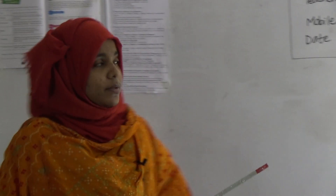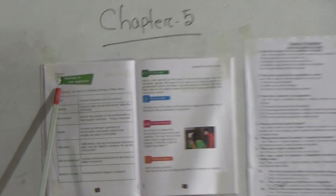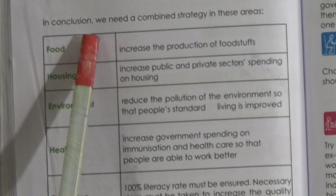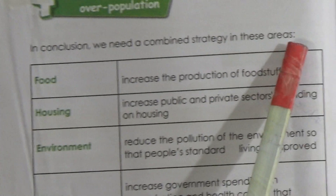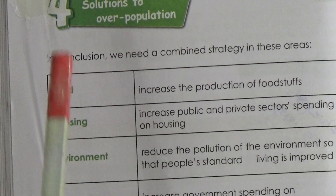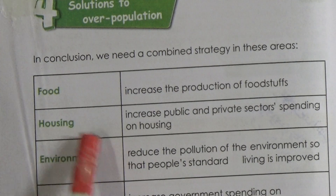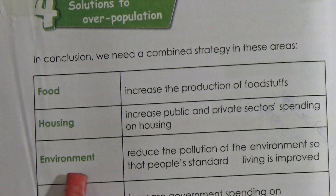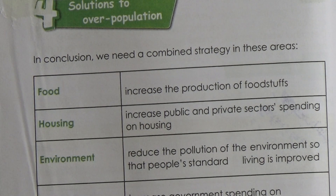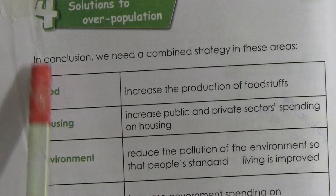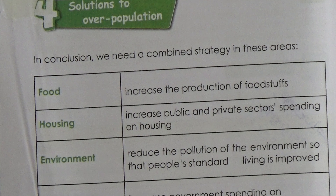Let's start today's topic: Chapter Five, Topic Four — Solution of Overpopulation. In conclusion, we need a combined strategy in these areas: food, housing, environment, health, education, skill development, and balance of trade.